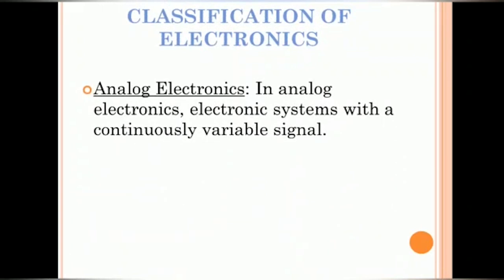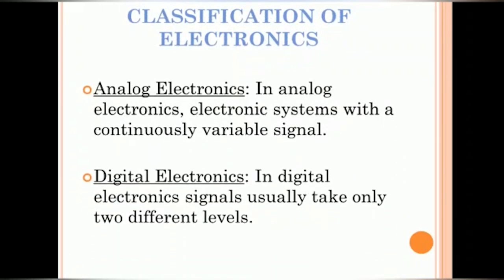Electronics is usually classified into two types. Analog Electronics and Digital Electronics. In Analog Electronics, electronic systems with a continuously variable signal whereas in Digital Electronics, signals usually take only two different levels.